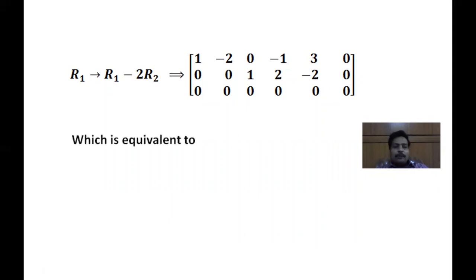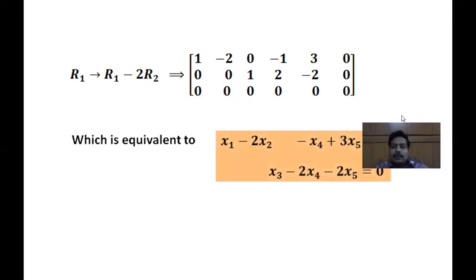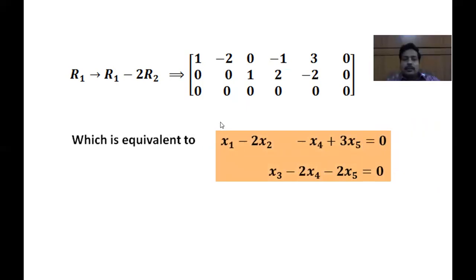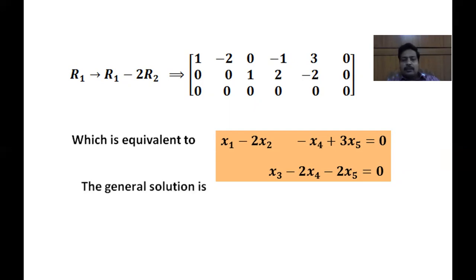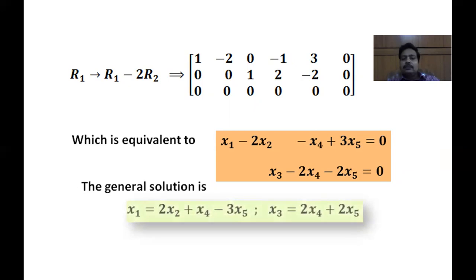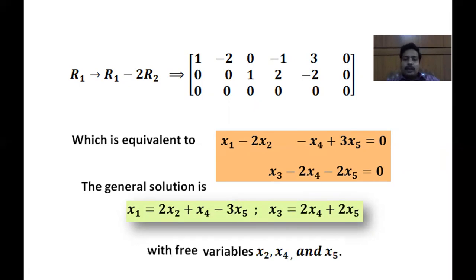The reduced system gives two equations: x1 - 2x2 - x4 + 3x5 = 0 and x3 - 2x4 - 2x5 = 0. Solving: x1 = 2x2 + x4 - 3x5 and x3 = 2x4 + 2x5. We identify that x2, x4, and x5 are free variables.